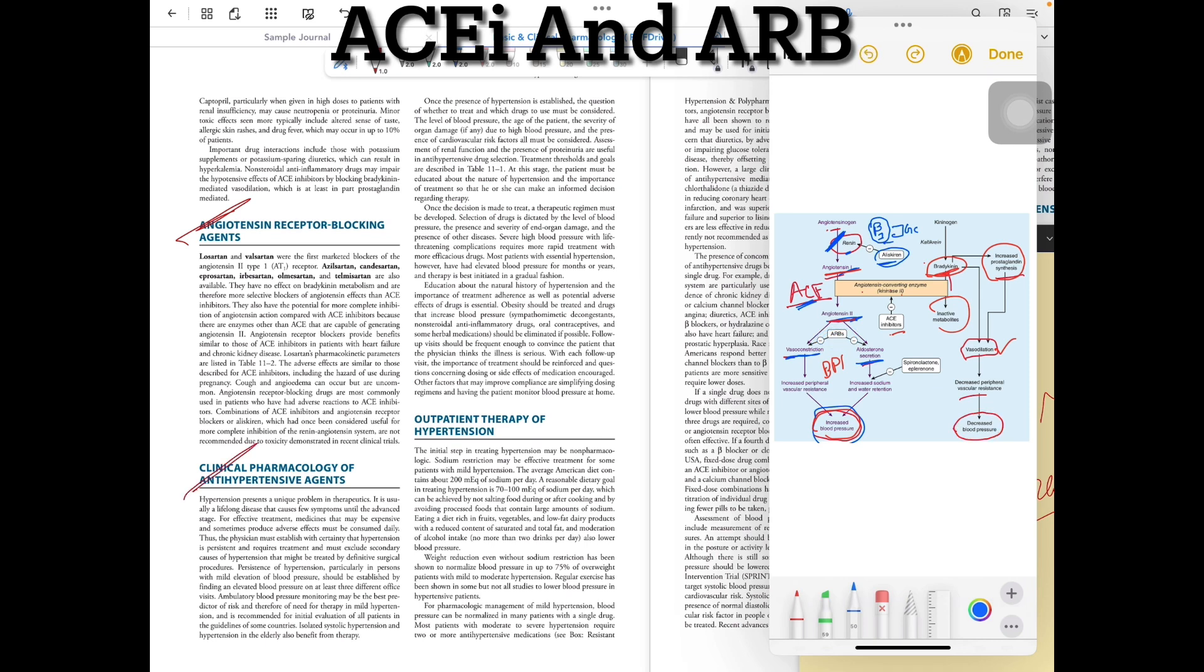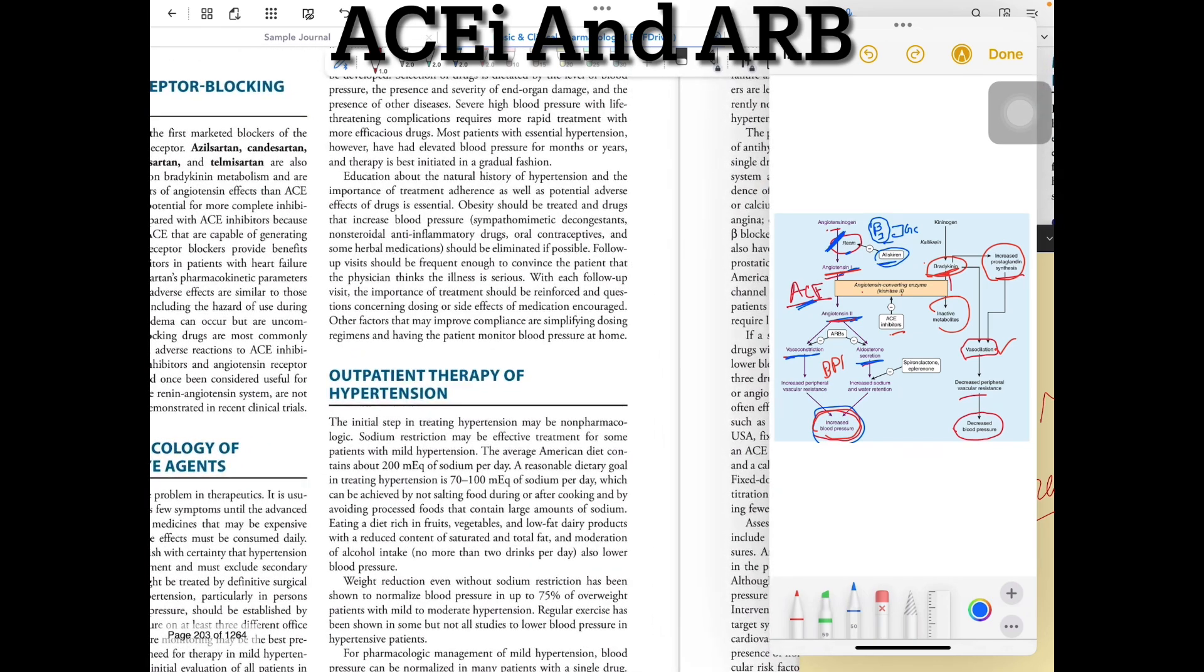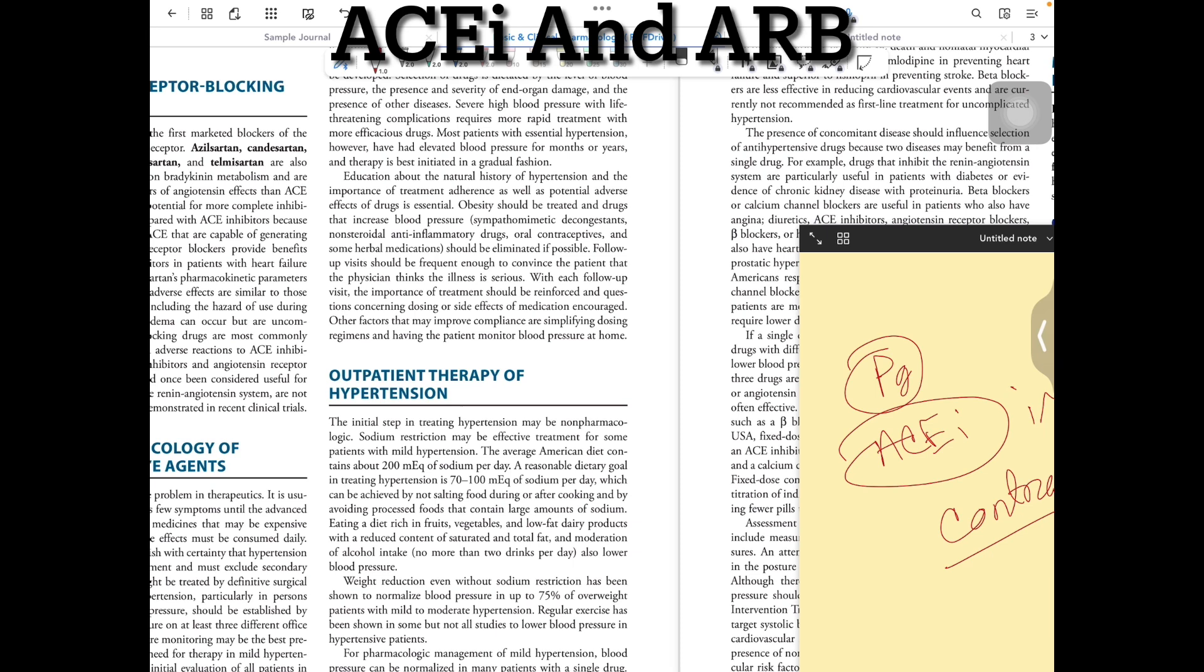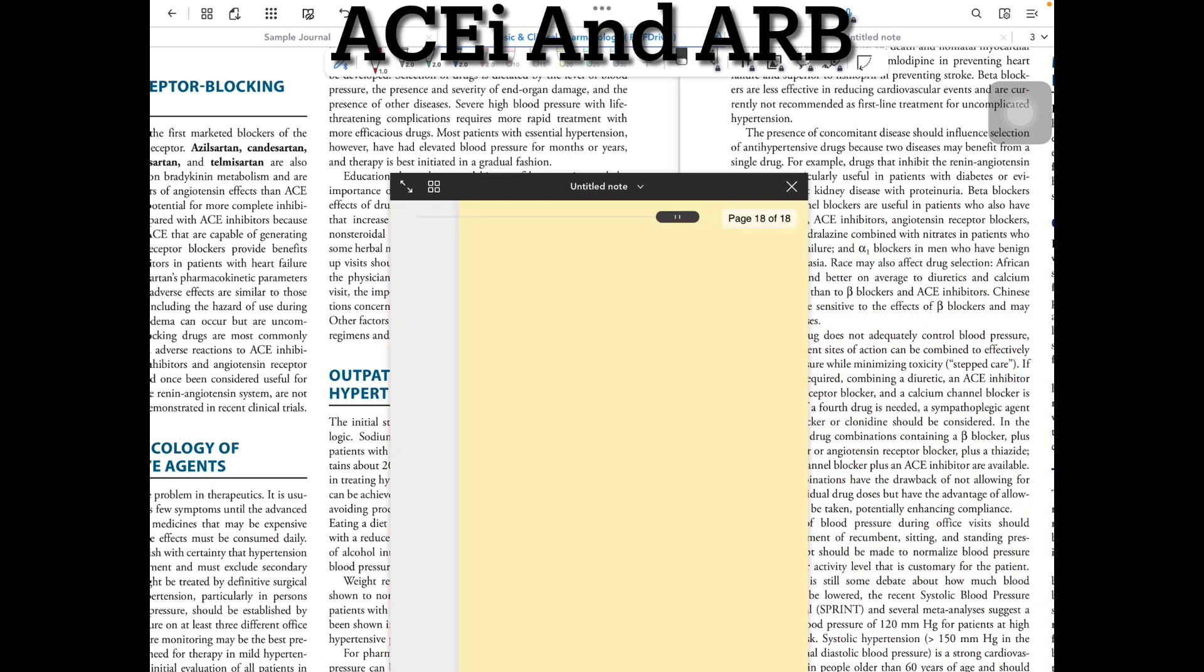Now let's review Clinical Pharmacology Antihypertensive Agents for Outpatient Therapy. What options do we have for outpatient management? Option A: ACE inhibitors or ARBs. Option B: Beta blockers. Option C: Calcium channel blockers. Option D: Diuretics. And option E: Alpha blockers.